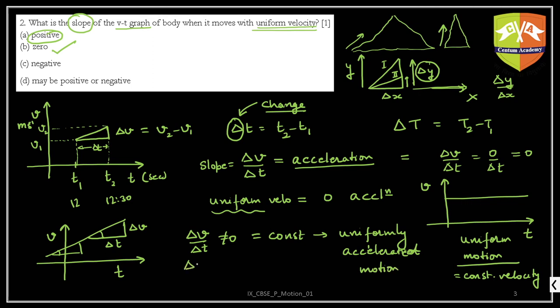You can also have a negative slope. In this case, as time progresses, velocity is decreasing — the final velocity is less than the initial velocity, so delta v is less than zero. Velocity is reducing, which means the object is decelerating.